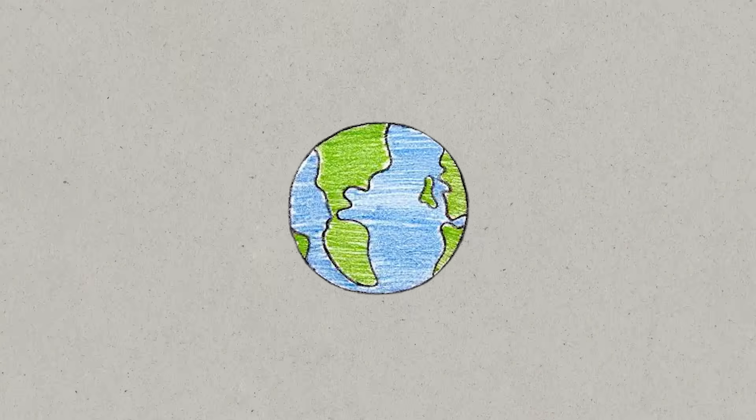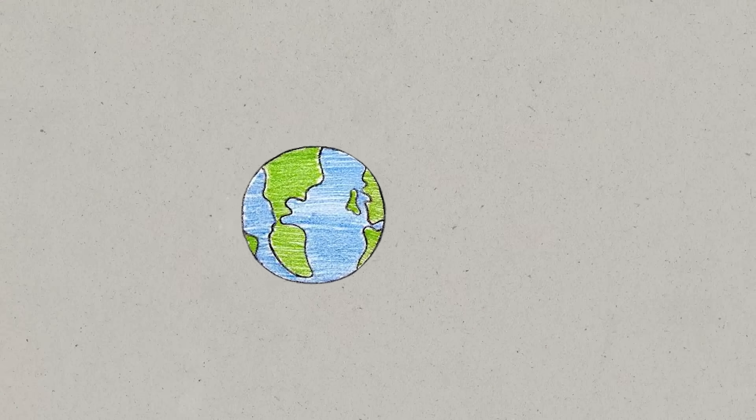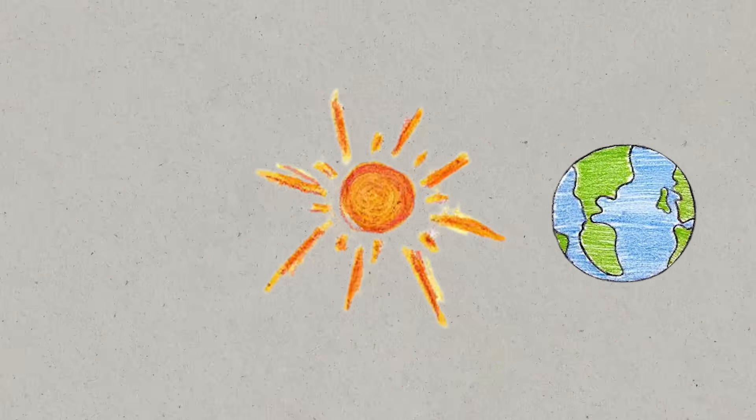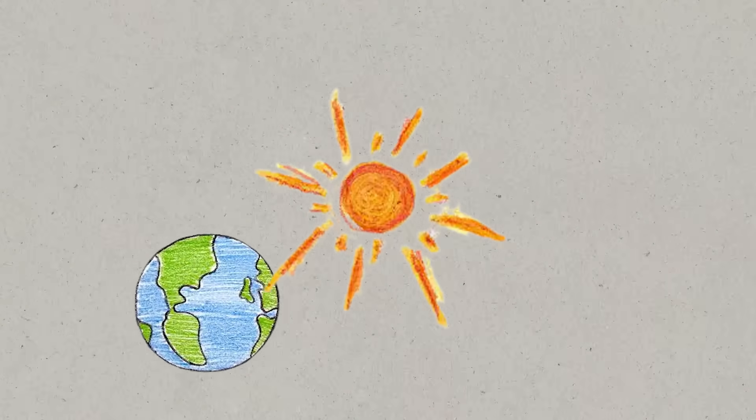What is a year? Take this crayon and draw me a timeline. A year is a trip around the sun. How long does that take? We say it takes 365 days, but I got a feeling you're going to tell me that is not the case. That is totally not the case.